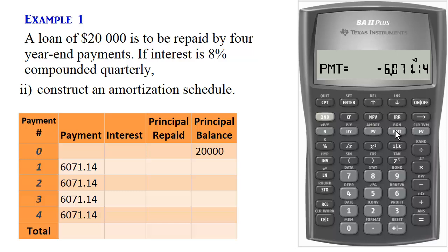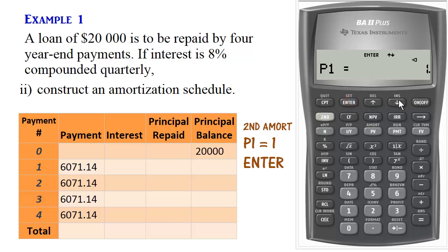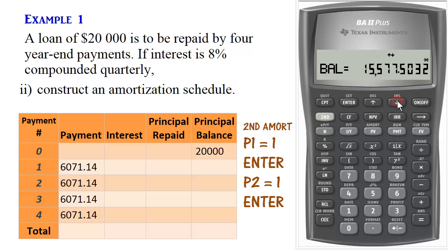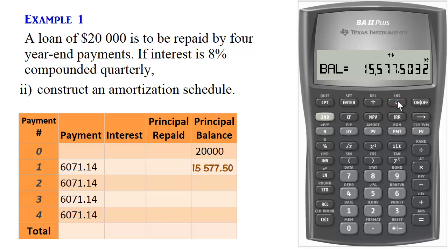To complete the amortization schedule, we simply press 2nd AMORT. For the first payment period, we set P1 to one and press Enter, then set P2 also to one and press Enter. When we scroll down, we get the balance for the first period, the principal repaid in the first payment period, and the interest included in that first payment.